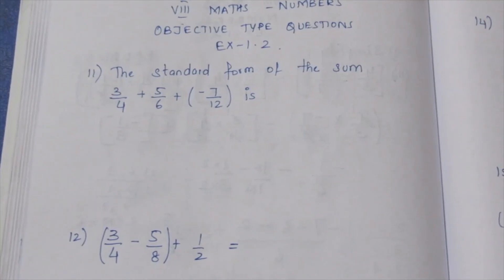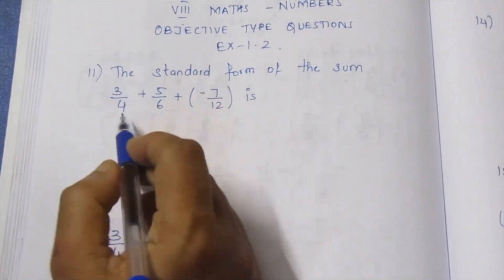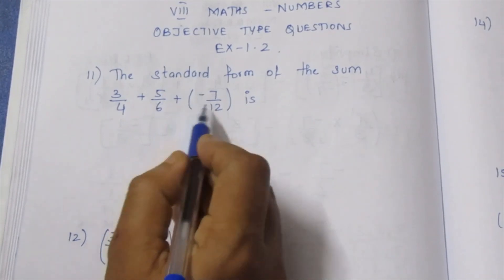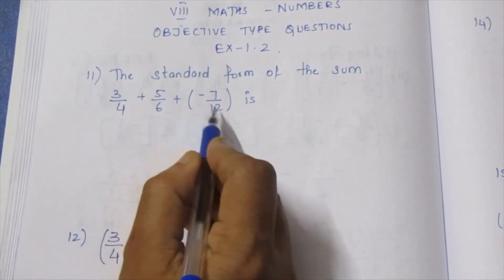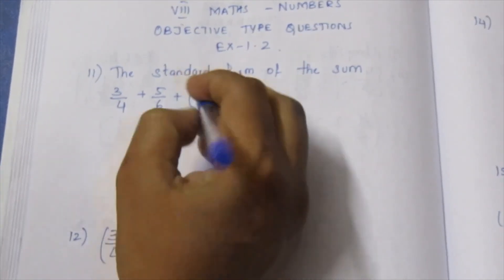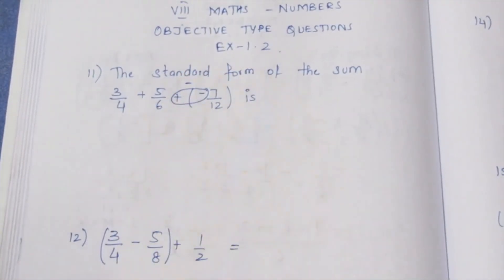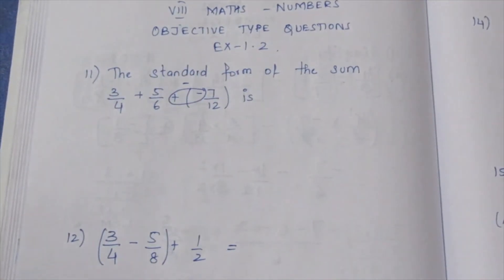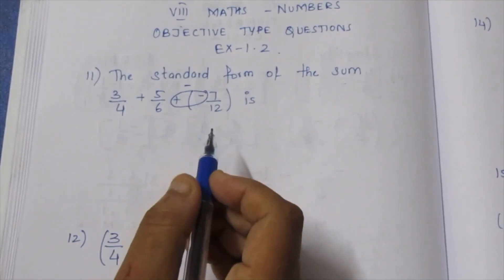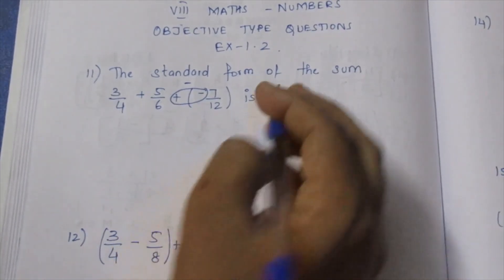We need to solve: 3 by 4 plus 5 by 6 plus minus 1. Note the signs — plus into minus gives minus. When the denominators are different, for addition and subtraction we need to find the LCM to make denominators the same.